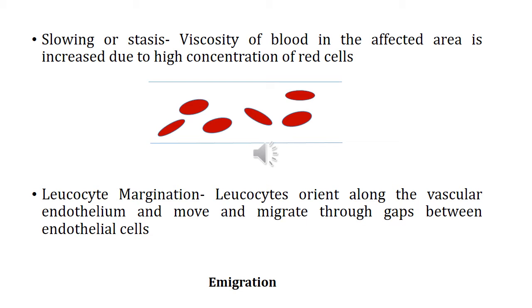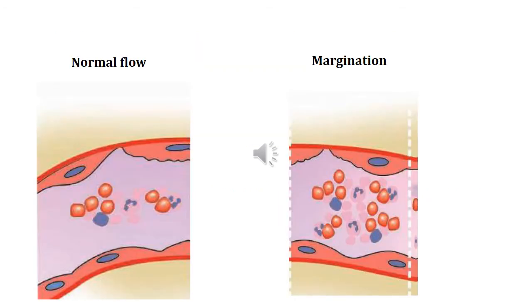With vasodilation there is increased flow of blood to the dilated region, giving a higher concentration of red blood cells. As the concentration of red blood cells increases, the viscosity of the blood also increases, and because viscosity increases, the flow of blood slows down. This slowing down, or stasis, is the next important change at the site of inflammation. In addition, there is leukocyte margination, meaning leukocytes orient along the vascular endothelium and move towards the walls of the capillaries. This process of moving along or between the endothelial cells is also known as emigration.